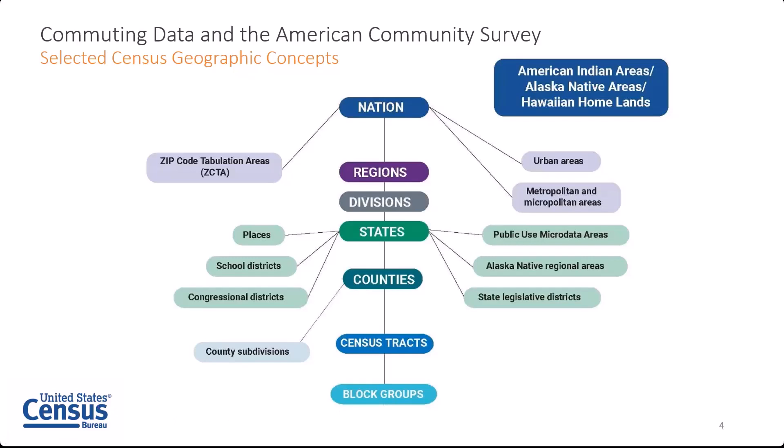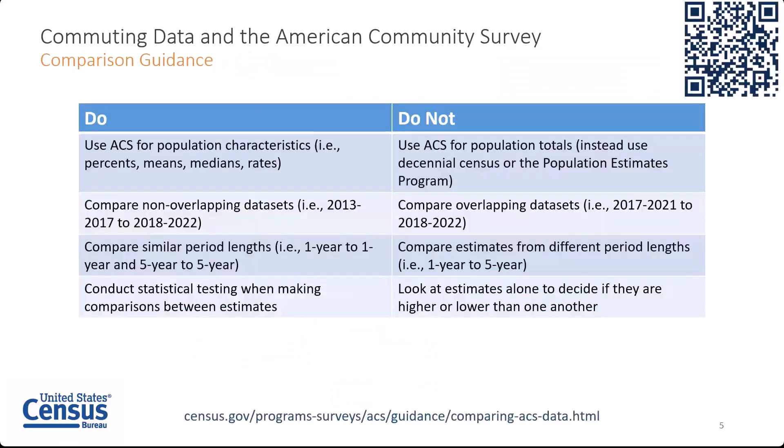We will see in our live demonstration on data.census.gov how to get diverse commuting data at some of these smaller geographies. As I mentioned, the ACS provides estimates, and that in and of itself is a strength of the ACS — estimating characteristic distribution. The Census Bureau recommends that users compare population characteristics such as percents, means, medians, and rates rather than estimates of population totals. If you're looking for population totals, we recommend using the decennial census or population estimates program.